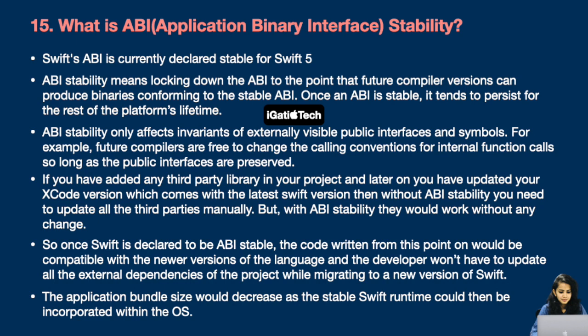If you have added a third-party library in your project and later updated your Xcode version with the latest Swift version, then without ABI stability you would need to update all third parties manually. But with ABI stability they would work without any change. Once Swift is declared ABI stable, code written from this point on is compatible with newer versions of the language, and developers won't have to update all external dependencies while migrating to a new Swift version. Additionally, the application bundle size would decrease as the stable Swift runtime can be incorporated within the OS.